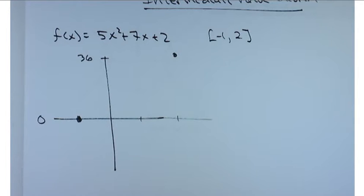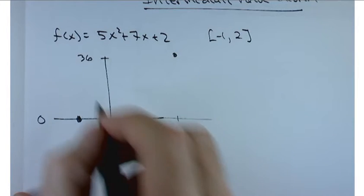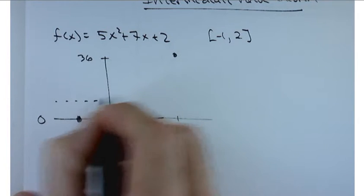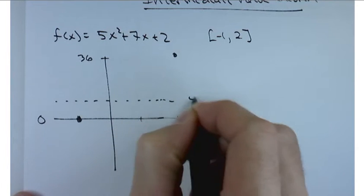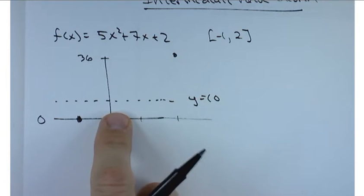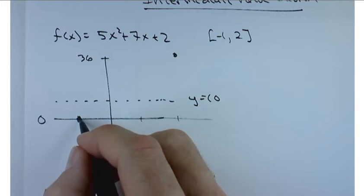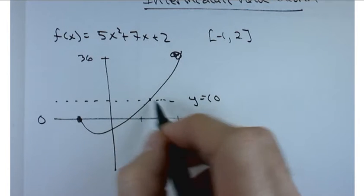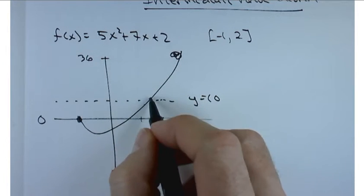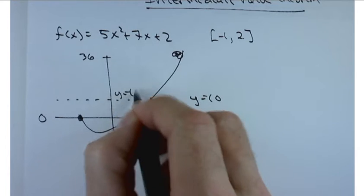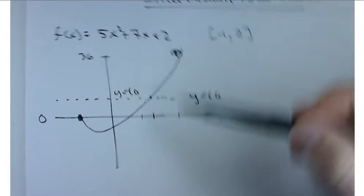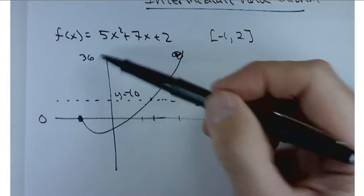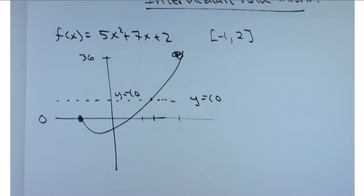So in particular, at some point here, this has to pass through, say, y equals 10. We should be able to find a value of x so that this graph will cross and that value of x gives me y equals 10. Now, you can do that for any value of y in the interval 0 to 36, as long as this is a continuous function.